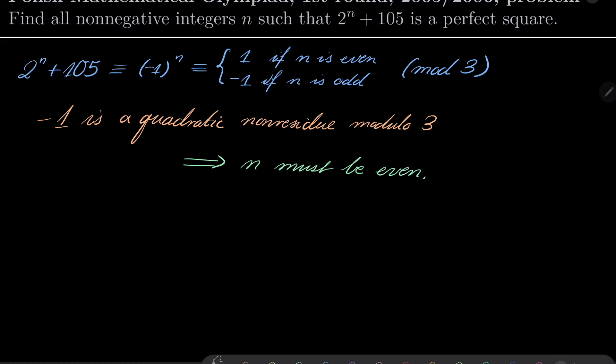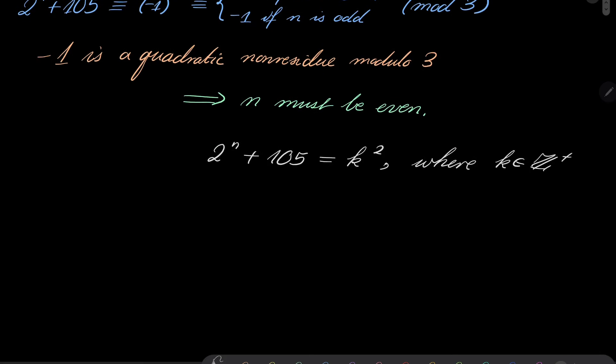All right. So, let's write now 2 to the power of n plus 105 equals k squared, where let's suppose that k is a positive integer. And let's solve it. Notice that we can write it in the following way: k squared minus 2 to the power of n over 2 squared equals 105.